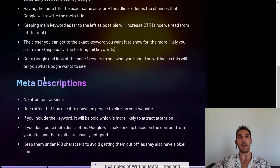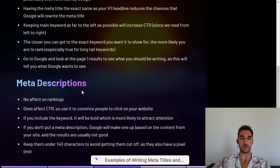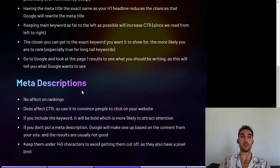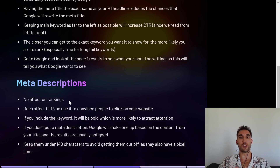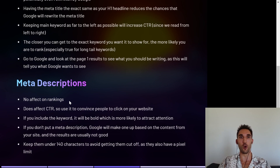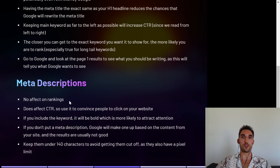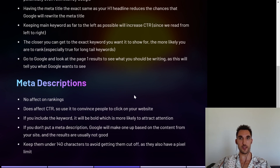Back to the video. Meta descriptions again have no effect on ranking directly. However, they do affect your click-through rate, so you want to use the meta description to convince people to click on your website. If you include the keyword, it's actually going to be bolded in Google search, which is more likely to catch attention.